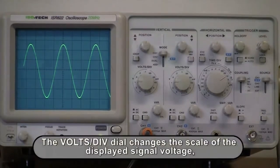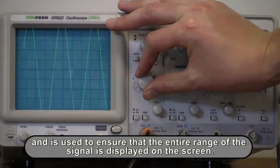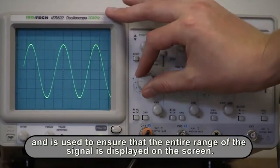The volts per division dial changes the scale of the signal voltage and can be used to ensure that the entire range of the signal is displayed on the screen.